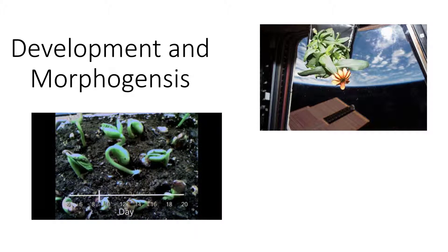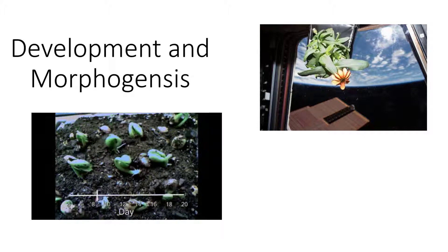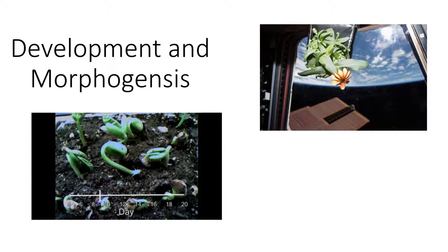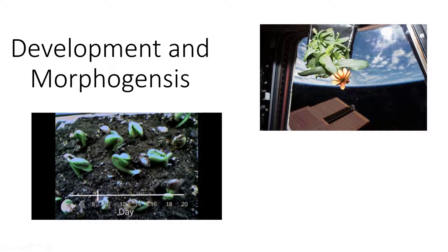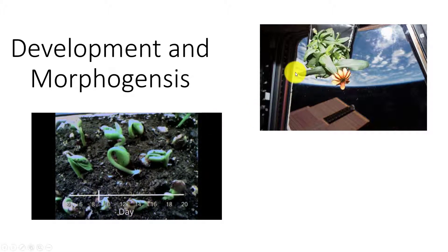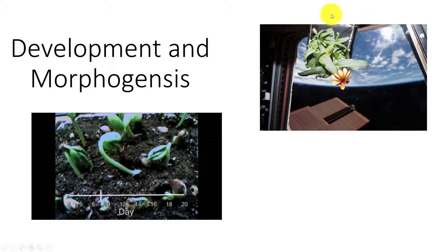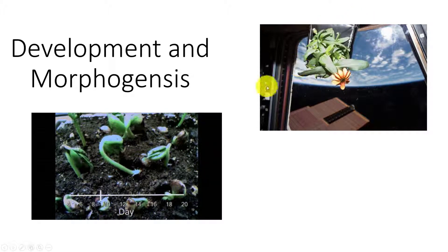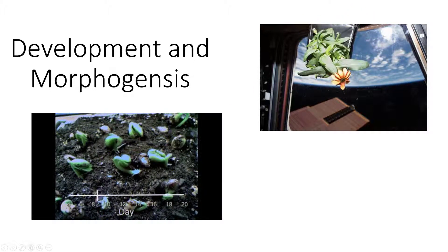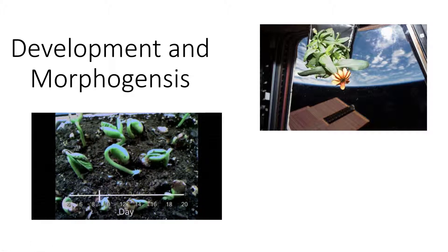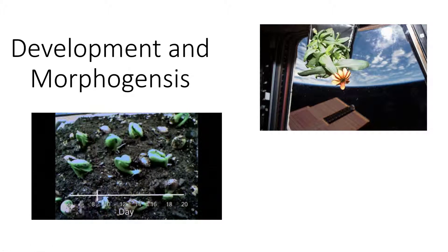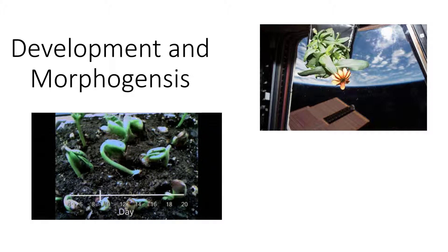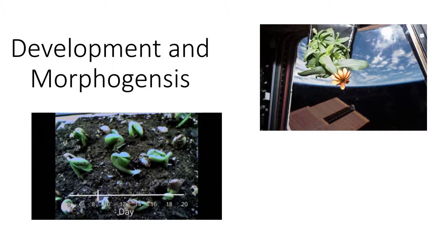Organisms obtain information from their environment. If grown in continuous light and unchanging temperatures, plants do not develop properly. Plants grown in microgravity on the International Space Station may bloom and produce seeds, but they often have odd shapes due to the lack of gravity. I'm Dr. DeBusk, and in this video I'm going to talk about development and morphogenesis, as well as the effect of environmental stimuli.